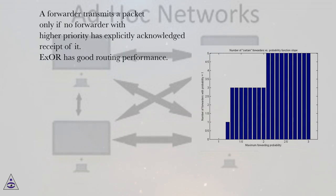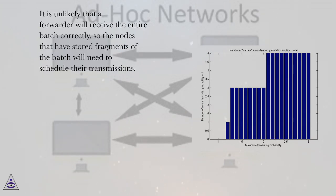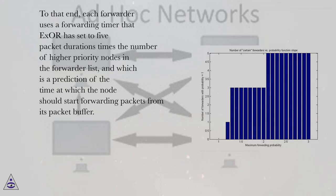ExOR has good routing performance. It is unlikely that a forwarder will receive the entire batch correctly, so the nodes that have stored fragments of the batch will need to schedule their transmissions. To that end, each forwarder uses a forwarding timer that ExOR has set to 5 packet durations times the number of higher priority nodes in the forwarder list, and which is a prediction of the time at which the node should start forwarding packets from its packet buffer.